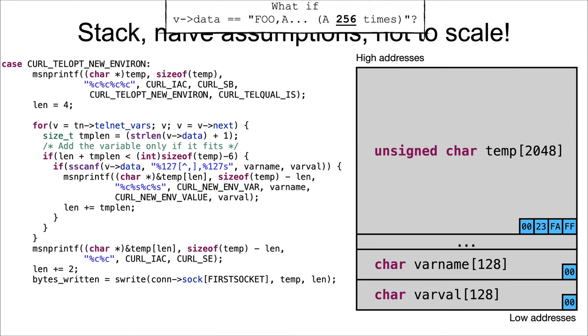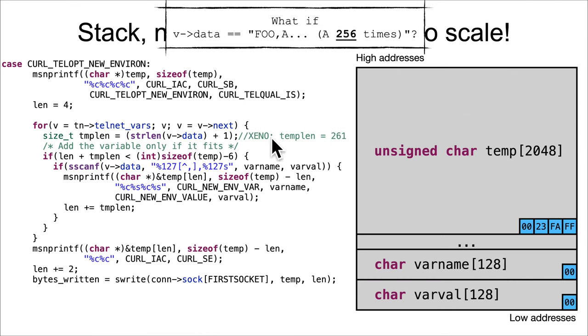So let's visualize that. In this example, foo is three characters plus the comma is four, plus 256 is 260, plus one is temp length of 261. Check length: four plus 261, is that less than the overall thing? Yes it is. So it's going to get into the scanf, and now we have varname set to foo and varval set to 127 A's.